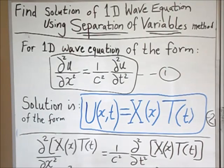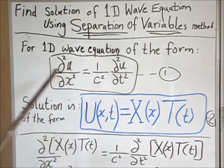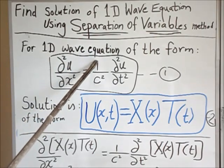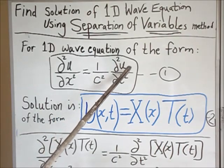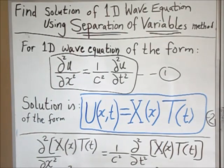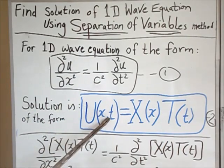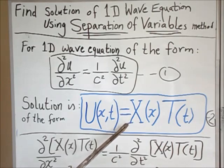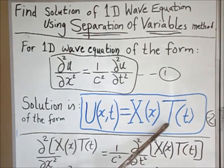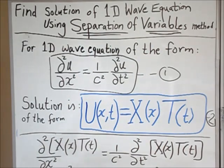For the 1D wave equation — for example a guitar string that is plucked and let go, or water waves — we can write the wave equation as: the second partial derivative of u with respect to x equals one over c squared times the second partial derivative of u with respect to t. Here u is a function of x and t, representing displacement and time. This time we want u to be in the form of a product of two functions: X, a function of x only, and T, a function of t only. That's how this method works.